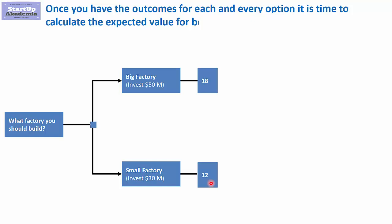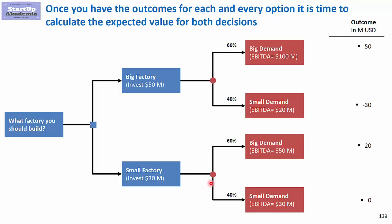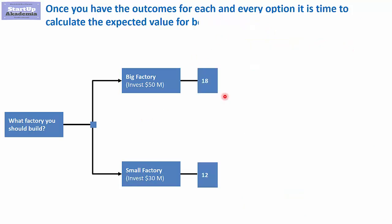Generally speaking, that is the whole idea behind the decision tree. You define the decisions and scenarios, get the outcomes, and calculate the expected value of those decisions using the outcomes and the probabilities. Let's do this.